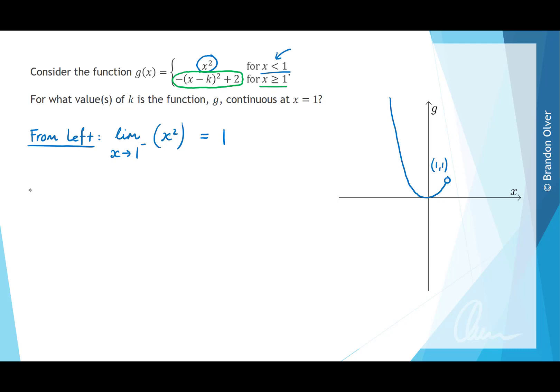Next we consider the limit as we approach from the right. Mathematically this is the limit as x approaches 1 from the positive side, and the rule that exists for that part of the graph is negative x minus k all squared plus 2. Evaluating that limit by substituting 1 in, we find this approaches negative 1 minus k all squared plus 2.